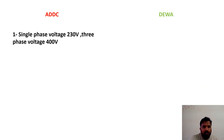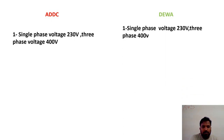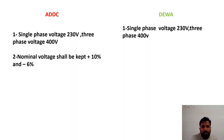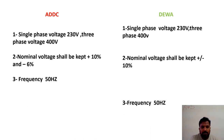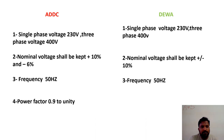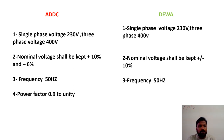Now let's see how power is transmitted between ADDC and DEWA. Single phase voltage is 230 volts and three phase voltage is 400 volts — both ADDC and DEWA are the same. Nominal voltage shall be kept at plus 10% and minus 6% for ADDC, whereas DEWA is plus or minus 10%. Frequency is 50Hz for both, and power factor is 0.92 for both.